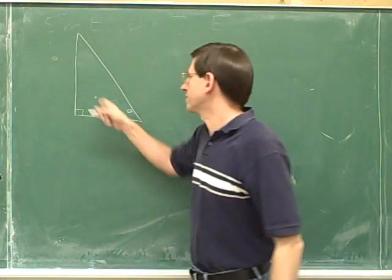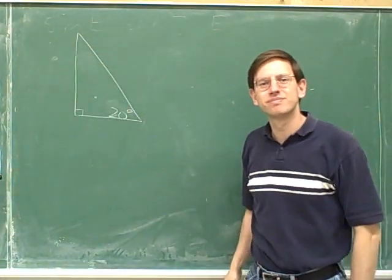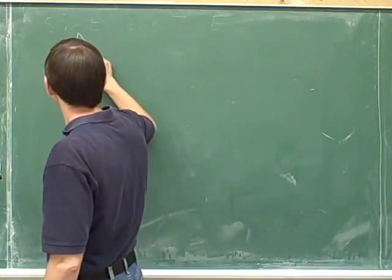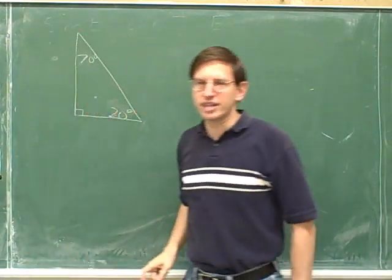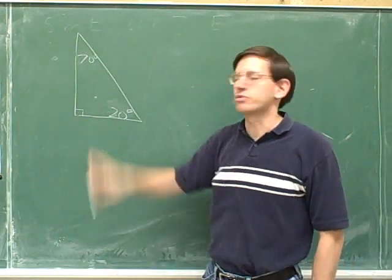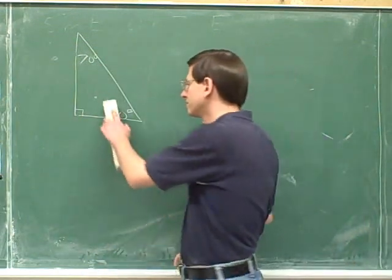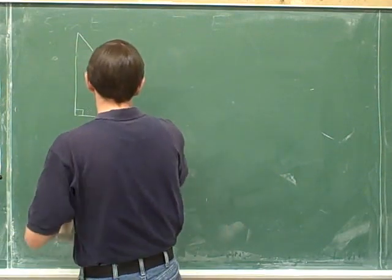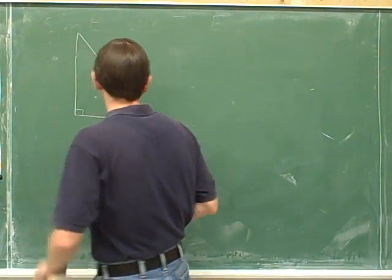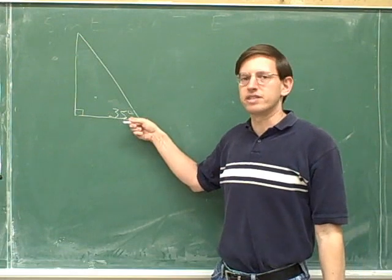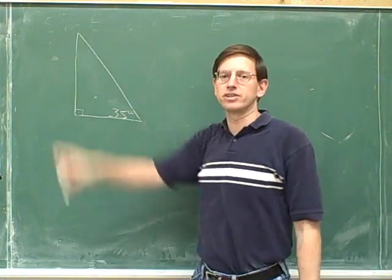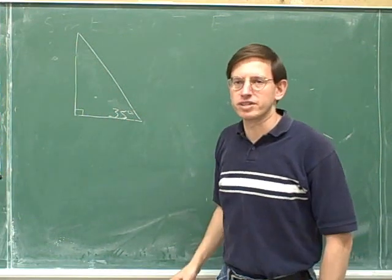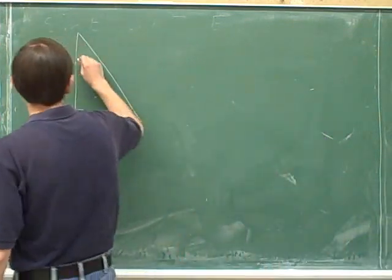If this angle is 20 degrees, how big is this angle? Remember that this angle plus this angle have to add up to 90, so this must be 70 — that's 90 minus 20. Let's say this is 35 degrees. How big is this angle? It must be 90 minus 35 degrees, which is 55 degrees. You can check: 55 plus 35 is 90.